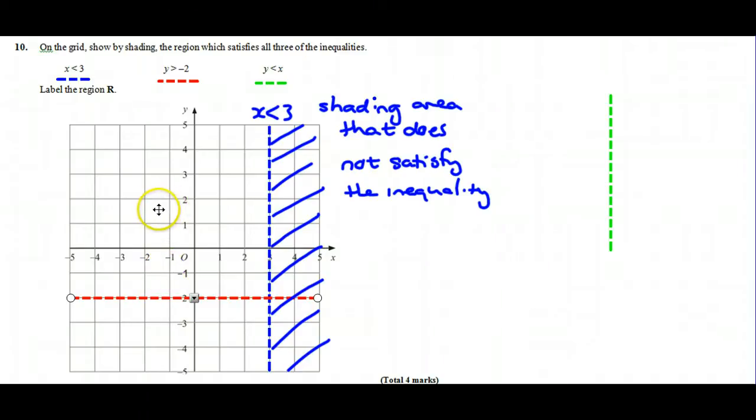So, having identified that line, we need to know where y is greater than negative 2. So that's everywhere above the line. So for that reason, I don't want this bit down here. So again, I've shaded the unwanted region.